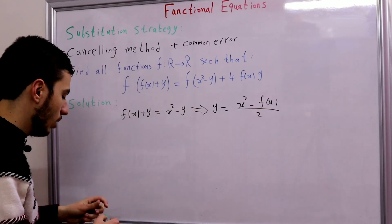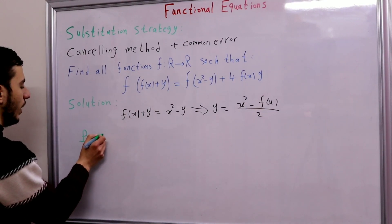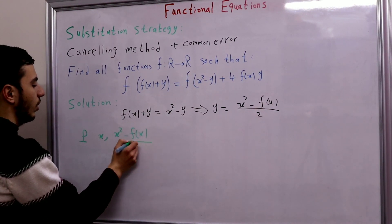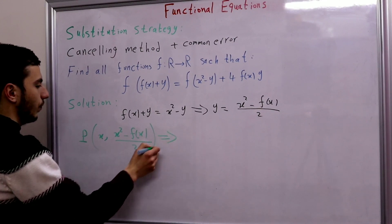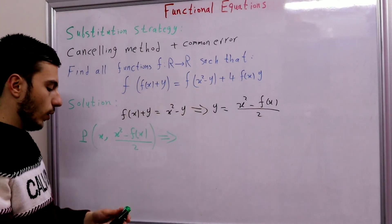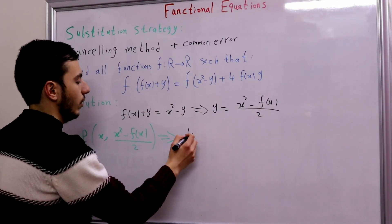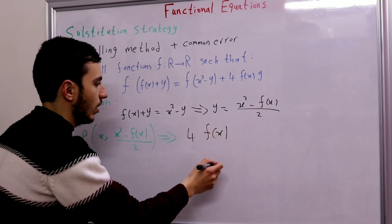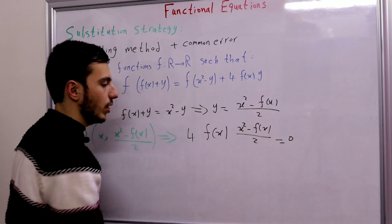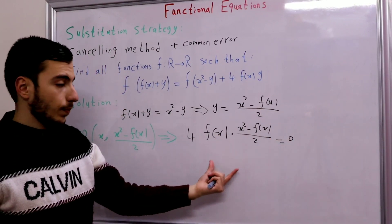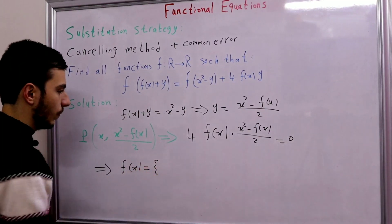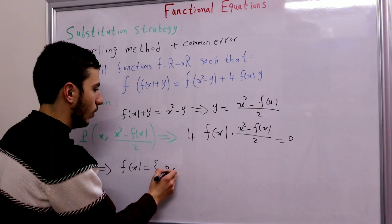Let's do this substitution. We write P(x, y) where y = (x² - f(x)) / 2. Because this relation holds, we can cancel the two f's, and we get the nice equation: 4·f(x)·((x² - f(x)) / 2) = 0, which simplifies to f(x)·(x² - f(x)) = 0.